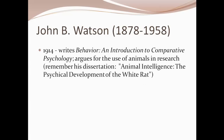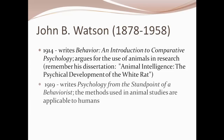In 1914, Watson publishes the book Behavior: An Introduction to Comparative Psychology, making cogent arguments about the use of animals in research. He continues the functionalistic claim about comparative psychology and the value of studying animals whose behavior often maps onto human behavior. His dissertation at the University of Chicago was titled Animal Intelligence: The Psychical Development of the White Rat. In 1919, Watson publishes Psychology from the Standpoint of a Behaviorist, making it clear that methods used in animal studies are applicable to humans.